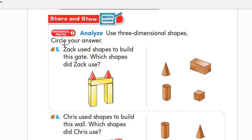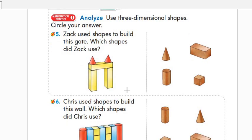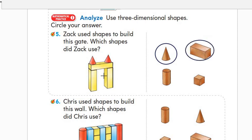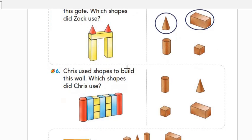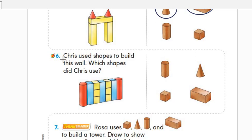Number five: analyze and use three-dimensional shapes — circle your answer. Zach used shapes to build this gate. Which shapes did Zach use? These are the 3D shapes. Yes — cone and rectangular prism. How many cones? Two cones. And one, two, three — three rectangular prisms.